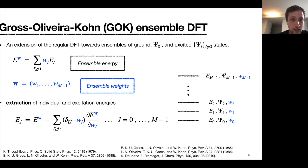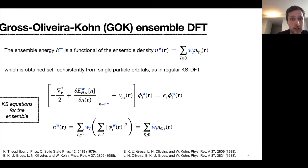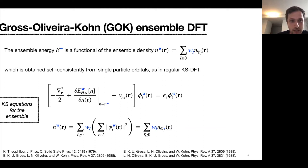The ensemble energy is simply a linear combination of individual energies for all the chosen states and ensemble weights. By knowing the weight dependence of this ensemble energy, we can recover individual and all the excitation energies. This ensemble energy is a functional of the ensemble density, which is similarly defined as a linear combination of individual interacting densities. This ensemble density is what we aim to reproduce when we consider an auxiliary non-interacting system of single-particle orbitals — a generalization of the Kohn-Sham system for ground states. The key difference from ground-state Kohn-Sham DFT is that the Hartree exchange-correlation functional is weight-dependent.